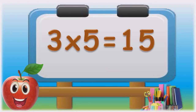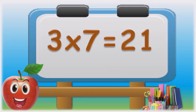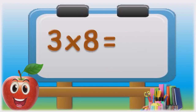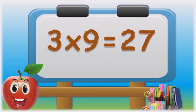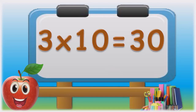Three fives are fifteen. Three sixes are eighteen. Three sevens are twenty-one. Three eights are twenty-four. Three nines are twenty-seven. Three tens are thirty.